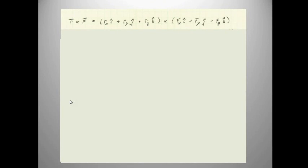Now we would like to take a look at actually calculating the physical cross product. We're going to start with a position vector r which has x, y, and z components in general, and a force vector F which also has x, y, and z components.